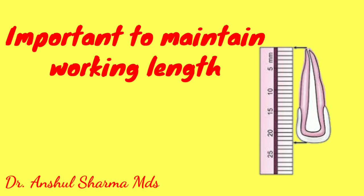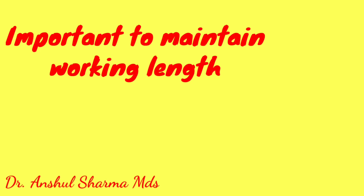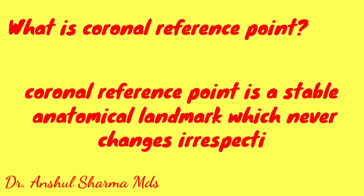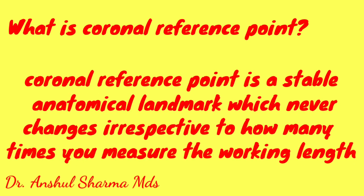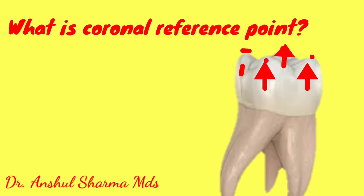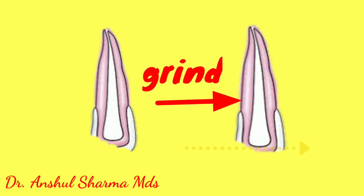A coronal reference point is a stable anatomical landmark which never changes, irrespective of how many times you measure the working length. With respect to anterior teeth, it is the incisal edge, and with respect to posterior teeth, it is the cuspal tip. If the anterior tooth is fractured, we should grind the incisal edge to have a stable landmark before proceeding.